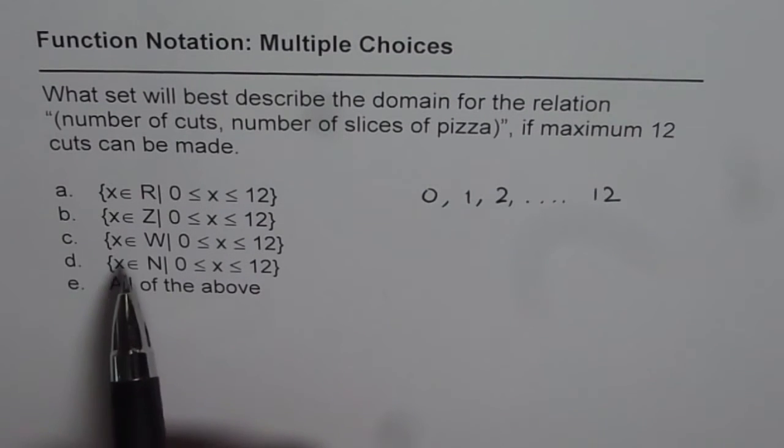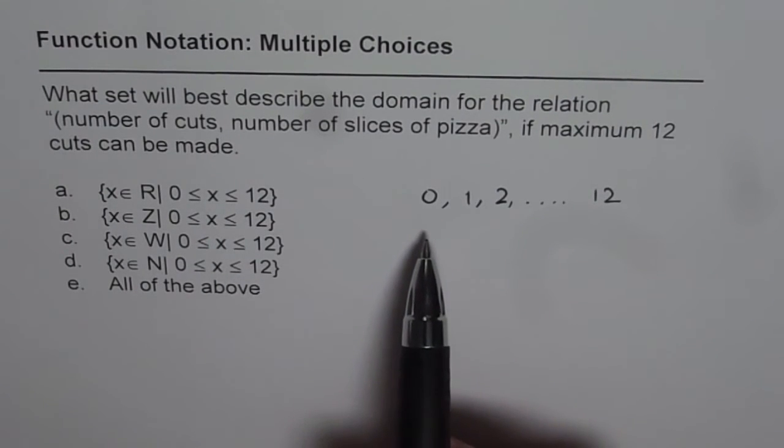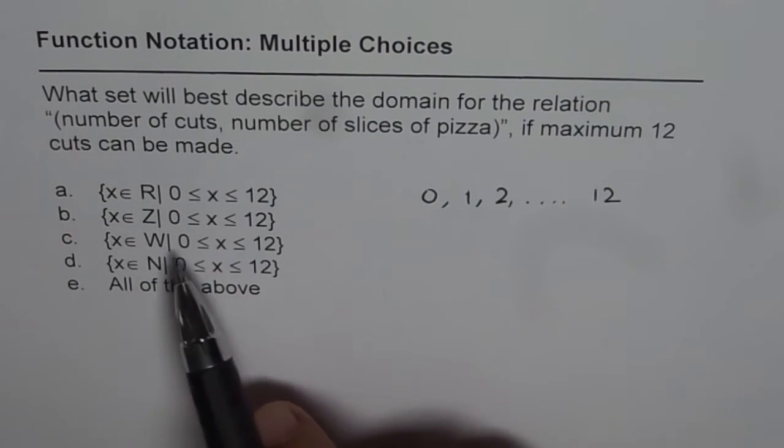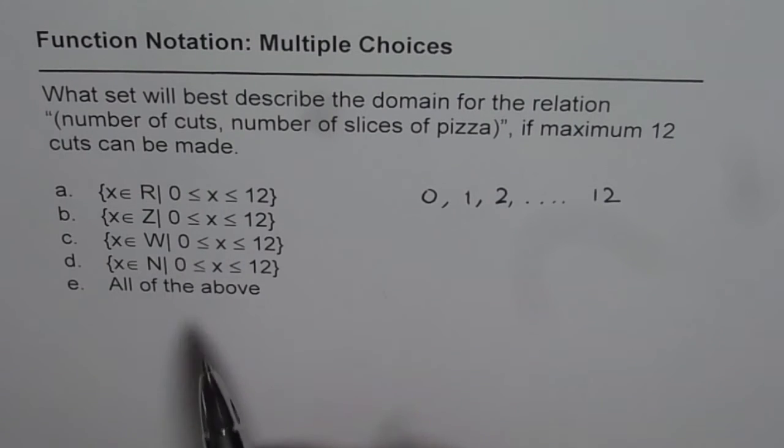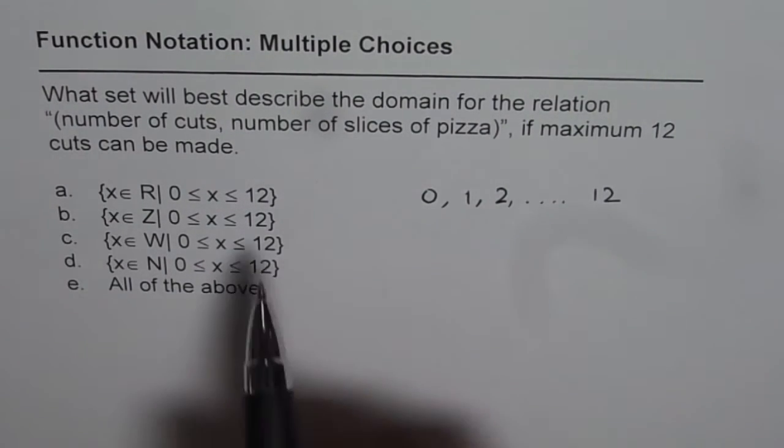The third one is x belongs to the set of whole numbers. What are whole numbers? Whole numbers are non-negative natural numbers, so whole numbers include numbers like 0, 1, 2, 3, 4. That is the correct option.